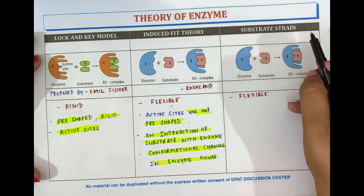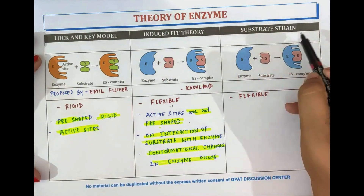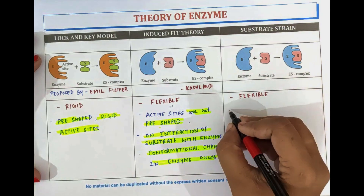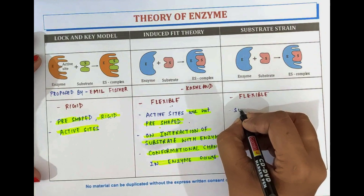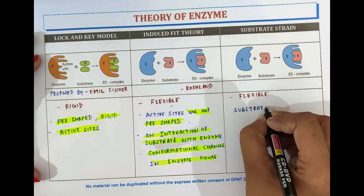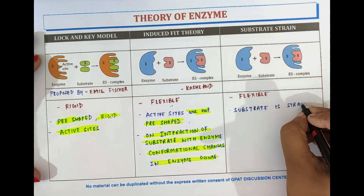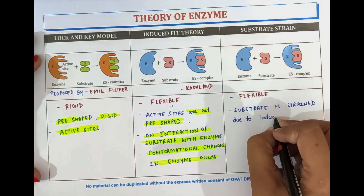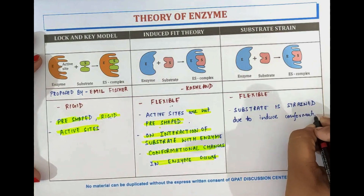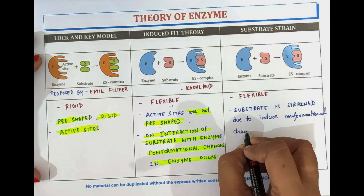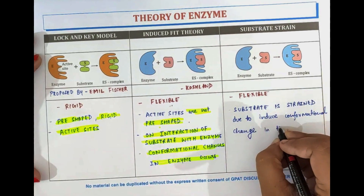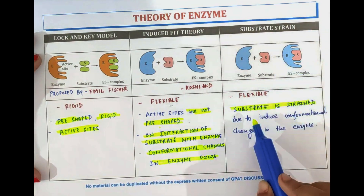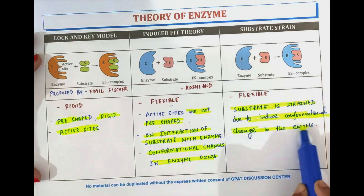Now coming towards the substrate strain theory — as the name suggests, a strain occurs due to the substrate. In this theory, it is assumed that the enzyme structure is flexible and the substrate is strained. The substrate is strained due to the induced conformational changes in the enzyme.